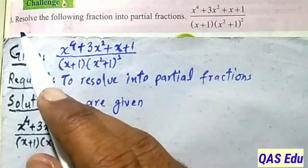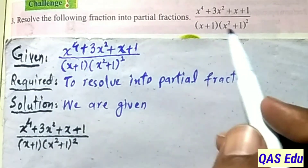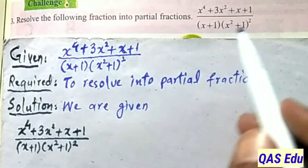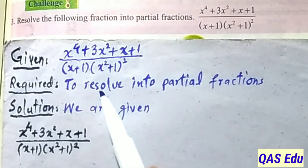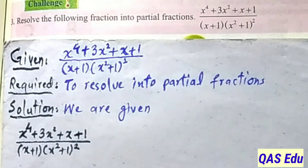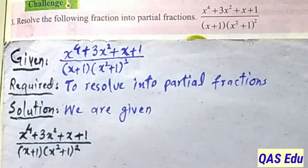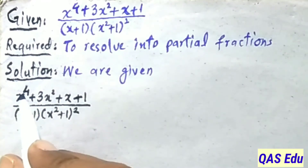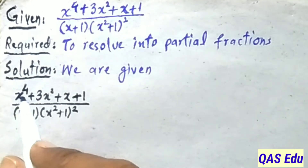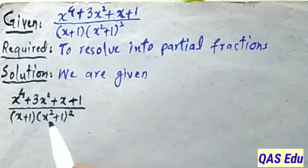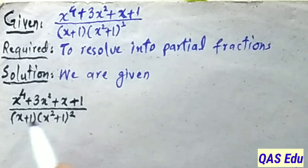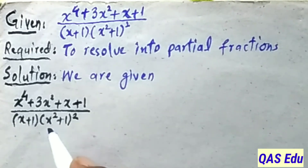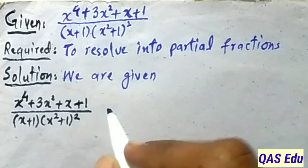Now the last question - the Challenge question of Review Exercise 4. We are given a fraction and asked to resolve it into partial fractions. Solution: we first check the given fraction. The numerator polynomial degree is 4 and the denominator polynomial degree is also 4. Adding gives 5 - so the degree of numerator equals denominator.